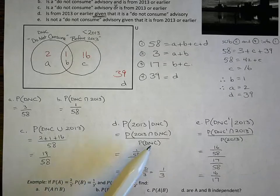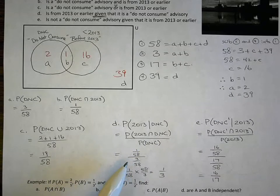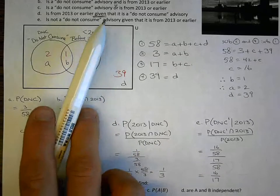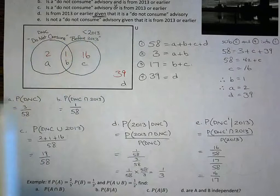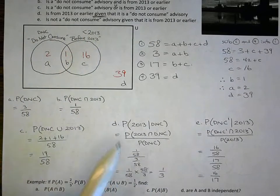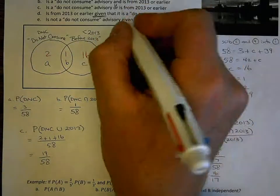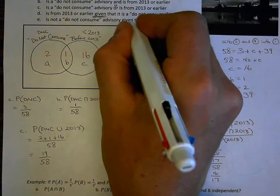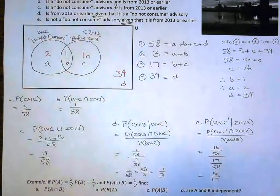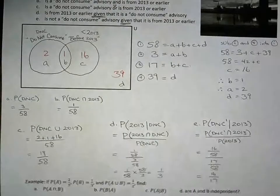You'll find that conditional probabilities are just an extension of what we've already done. The trick is to turn the words of the question into probability language, make sure you're in the correct order, and then apply your formula. The keyword 'given' is the one telling you to use conditional probability.